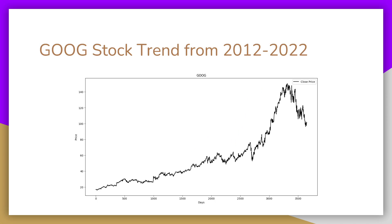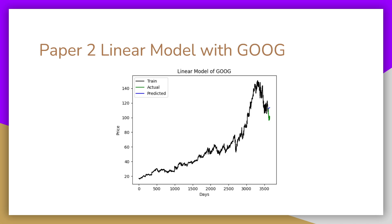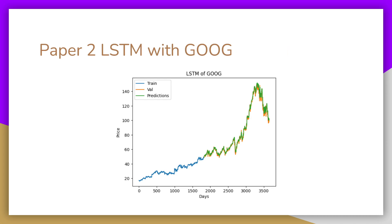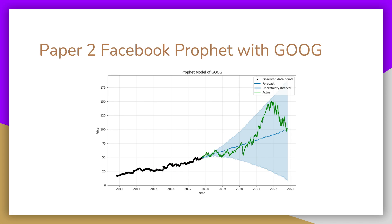For Paper 2, we used the Google stock, with data from 2012 to 2022. For the linear model, this is what it looks like. This is the decision tree. This is the LSTM, where we split the data in half again. And this is the Facebook Prophet model, where we split it in half and used an uncertainty interval.